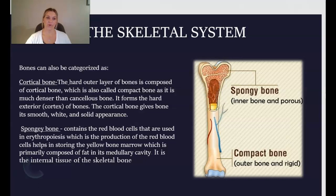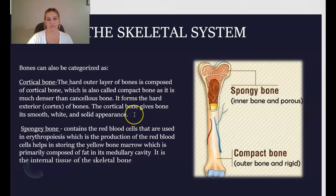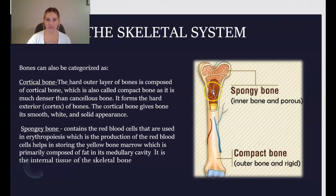It is also important to understand that bones can be categorized as cortical bone or spongy bone. Cortical bone is the hard outer layer of the bone, also called compact bone; it is much denser than spongy bone and gives bone its smooth, white, solid appearance. Spongy bone contains red blood cells used in the production of red blood cells and helps store yellow bone marrow, which is primarily composed of fat, in the medullary cavity.